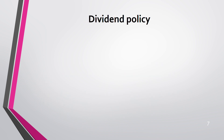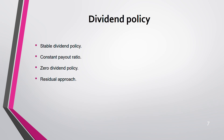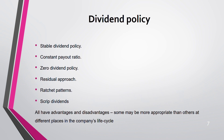Going by the practical meaning, there are several dividend policies: stable dividend policy, which stays at one level; constant payout ratio, same payout regardless of profit level; zero dividend policy, where you reinvest everything and pay no dividend; residual approach; ratchet pattern; and script dividends. Remember all of these have advantages and disadvantages. Some may be more appropriate at different stages of the company's life cycle.